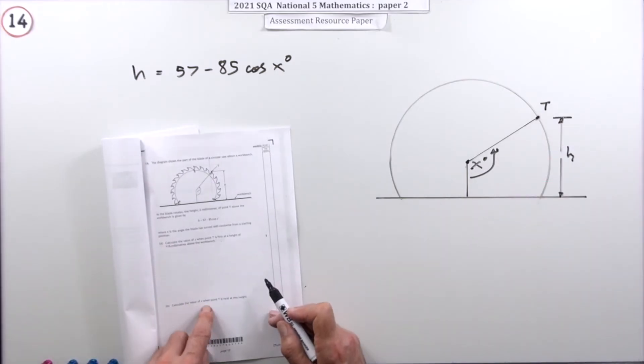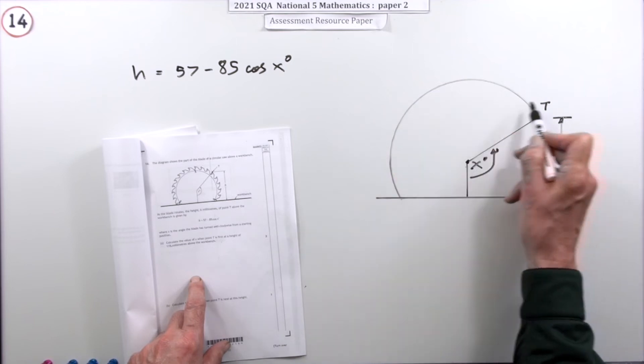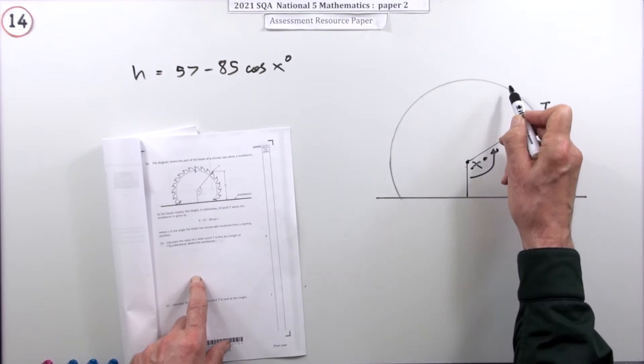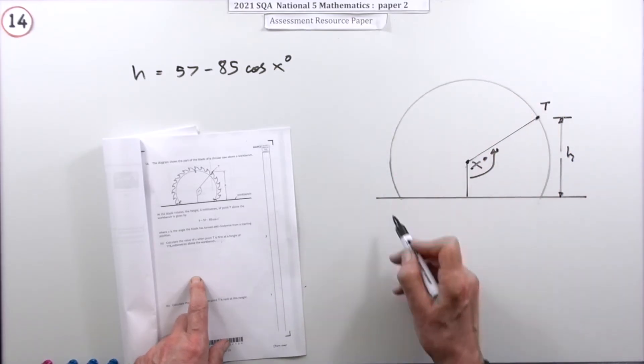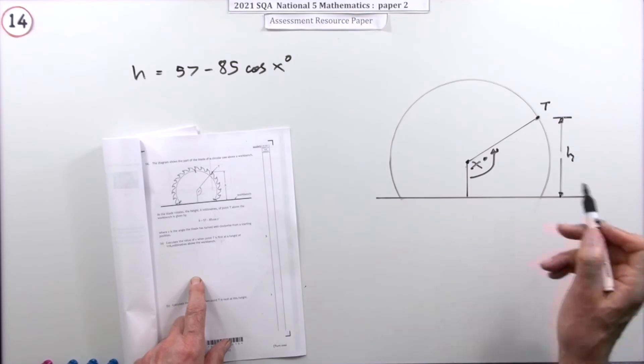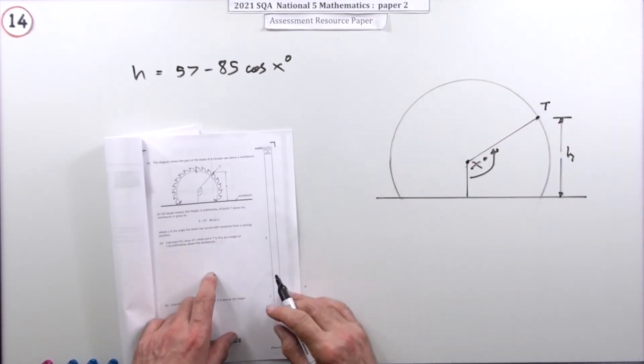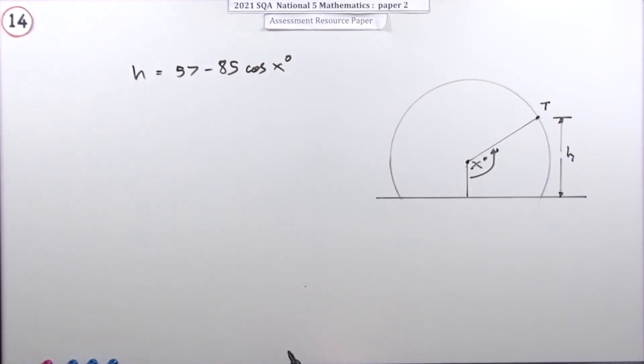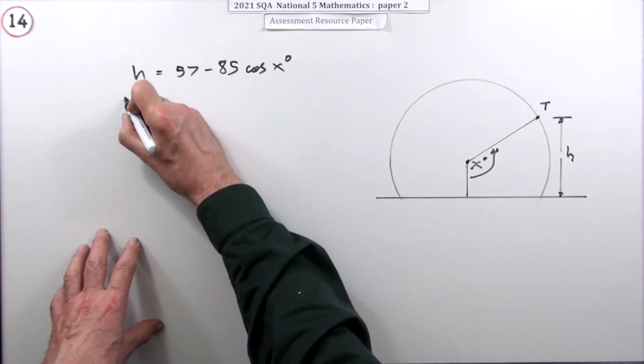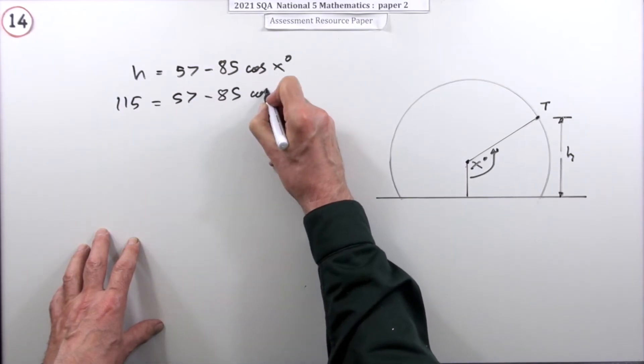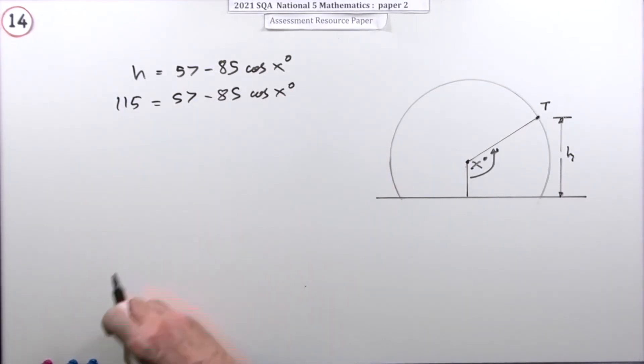The second part is when's it next at that height, because it'll be at that height twice unless it happens at the very top. It'll get to that height here, then it'll go above it and be back at that height over here, and then just keep repeating on and on. The question asks when is it first at that height because it's going to be there, then there, and then back again, and then do that forever and ever. Well, that just means put that 115 in here.